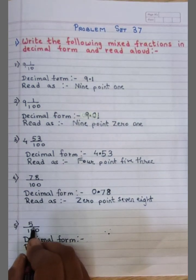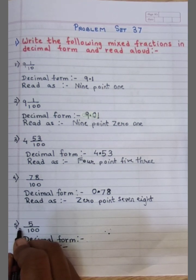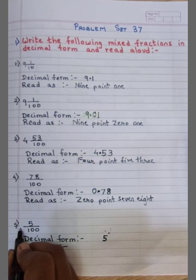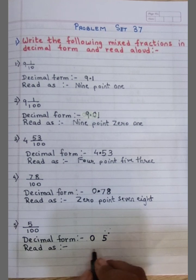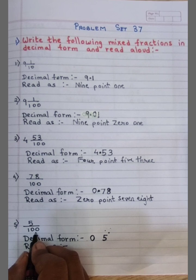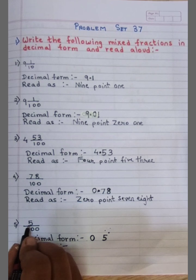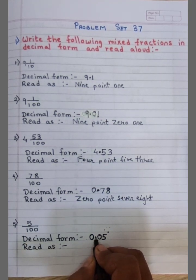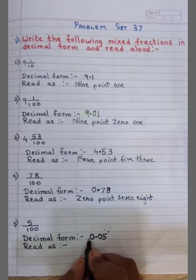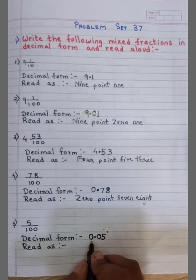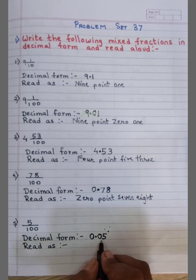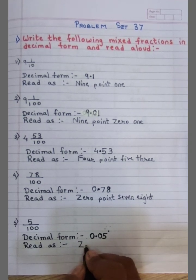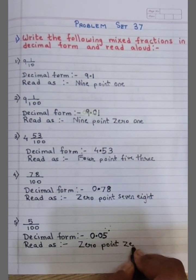Next number: 5 upon 100. There is no whole number, so I write 0. The denominator is 100, meaning I place the decimal point before 2 digits. I have only 1 digit — 5 — so I need to make it 2 digits by adding a zero. The decimal point separates the whole number and the fraction and tells you about the places of the fraction. I read this decimal form as 0.05.